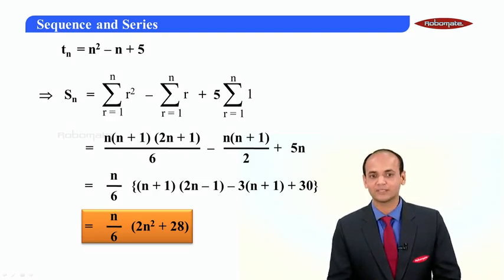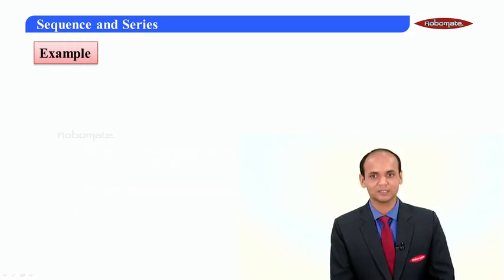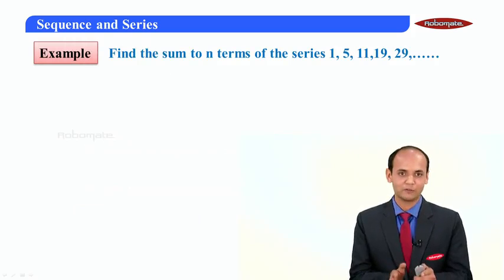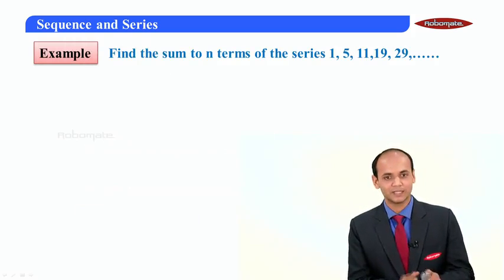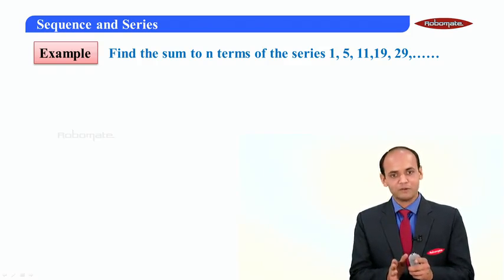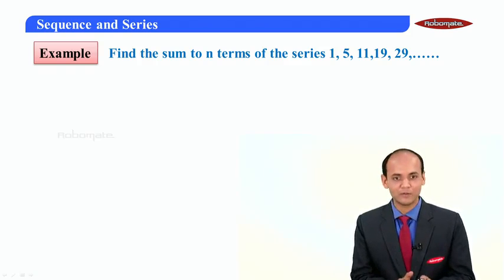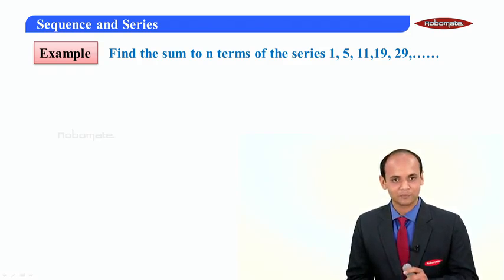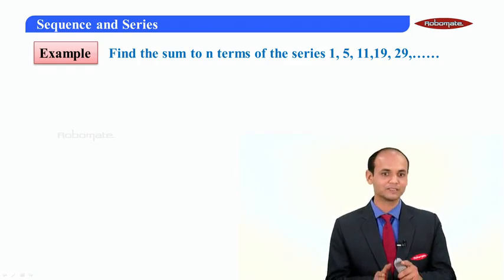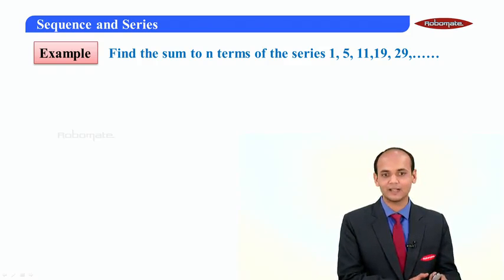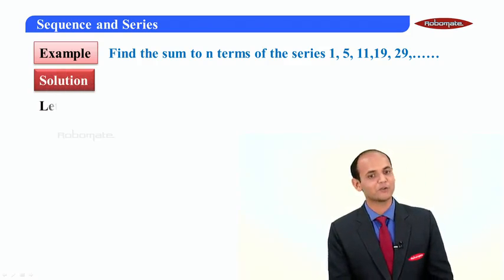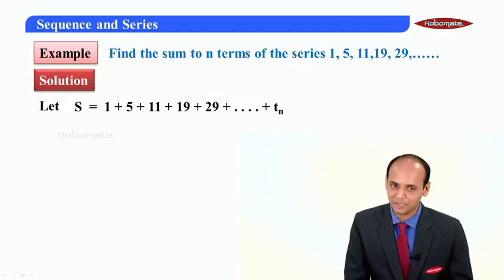Let us take one more example. I have to find the sum of the series 1, 5, 11, 19, 29, and so on for n terms. The difference between 1 and 5 is 4, between 5 and 11 is 6, and between 11 and 19 is 8. So the differences are 4, 6, 8, which again form an AP. Therefore, to find the nth term, I will again use the method of difference.